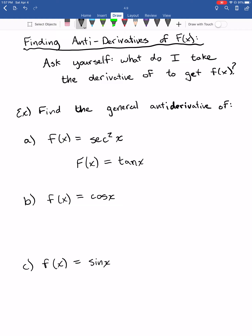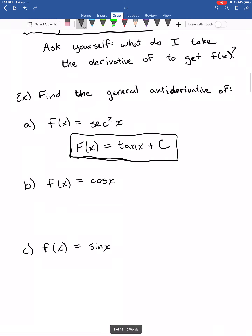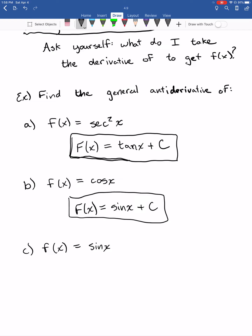If I just circled tangent of X without the plus C, I'd technically be wrong — the general antiderivative requires plus C. Part B: what is the antiderivative of cosine? What do I take the derivative of to get cosine? Sine and cosine kind of go back and forth, so the answer is sine of X plus C. You can always check your work by taking the derivative — the derivative of sine of X is cosine of X. Confirmed.